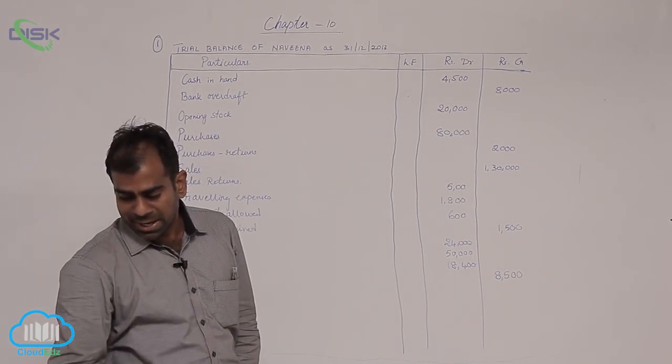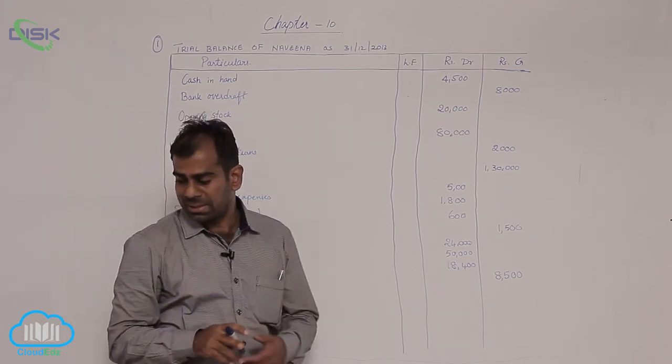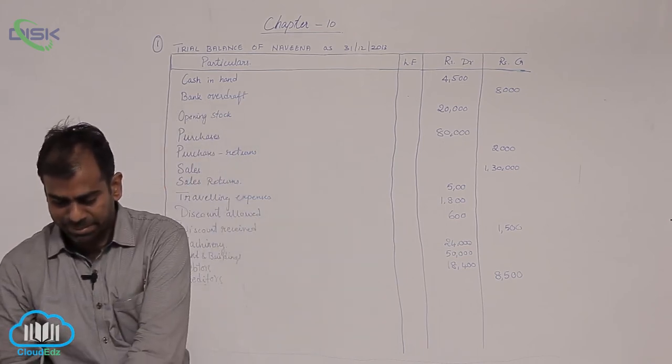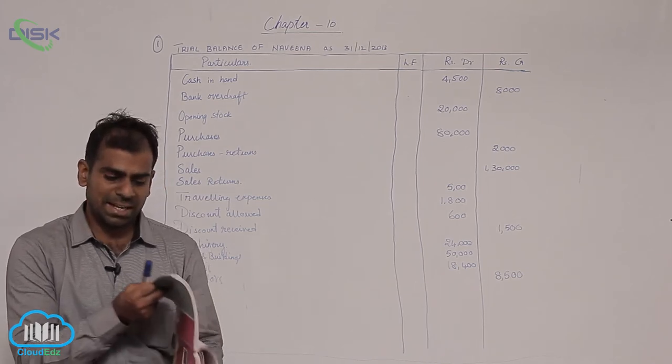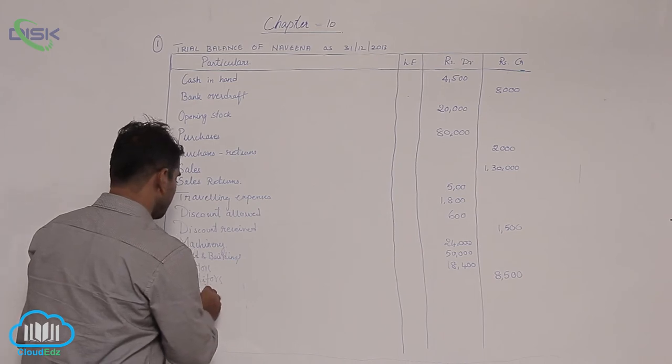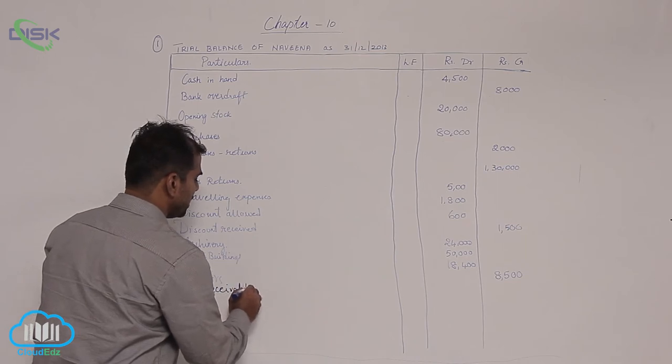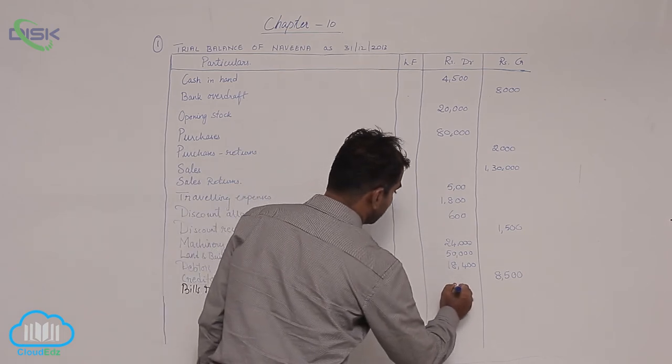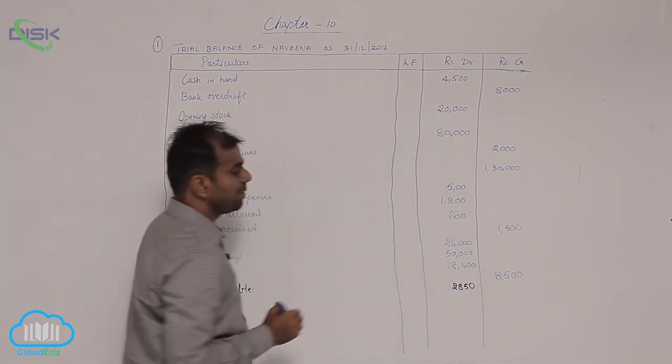Now next you have bills receivable showing a debit balance of 2,850. So we will write bills receivable in debit balance column 2,850.